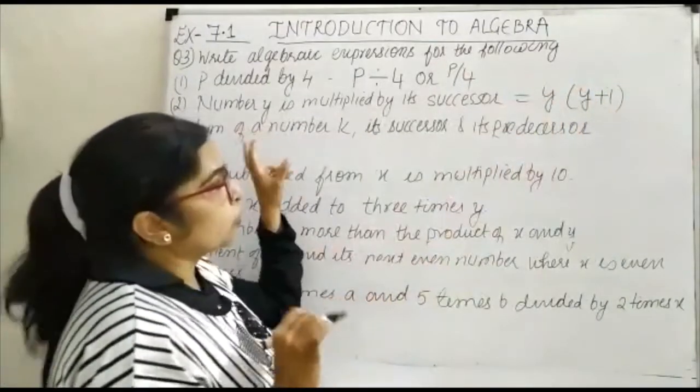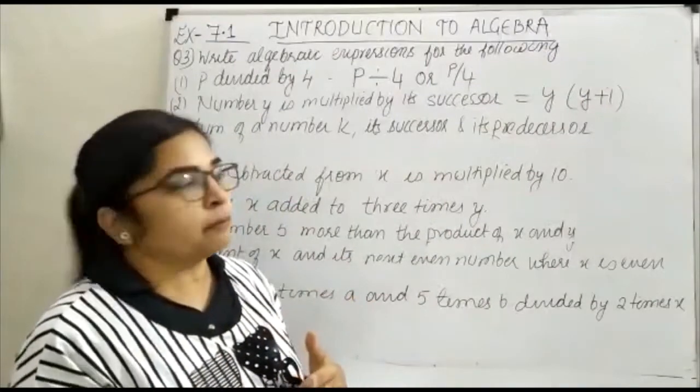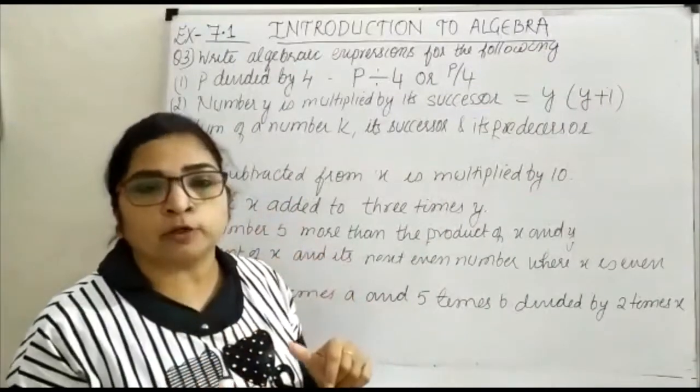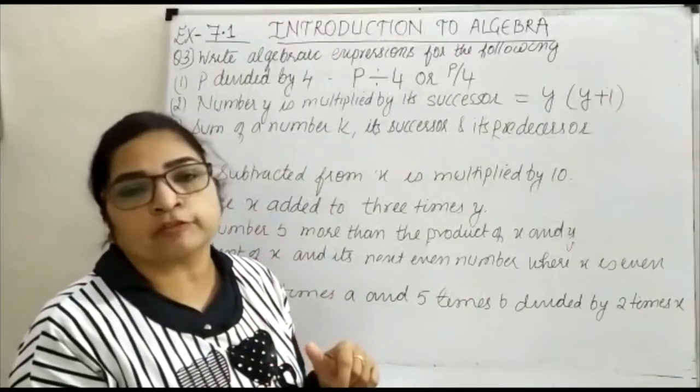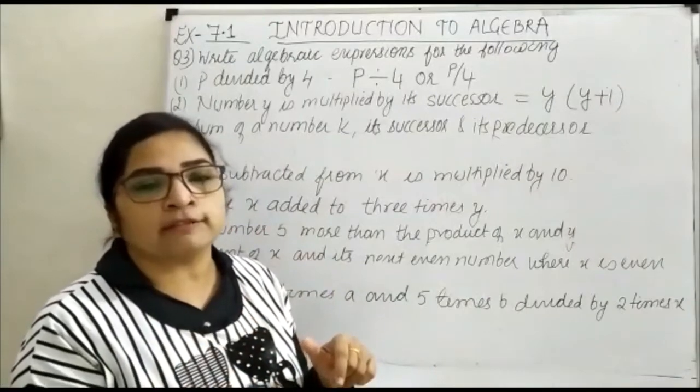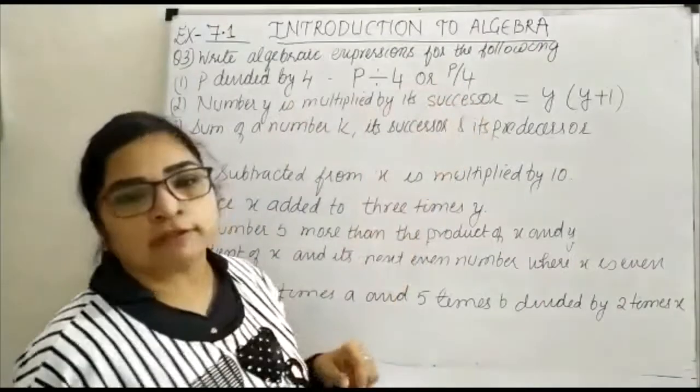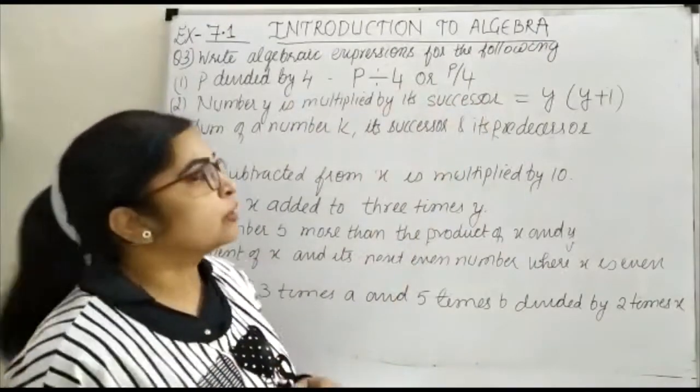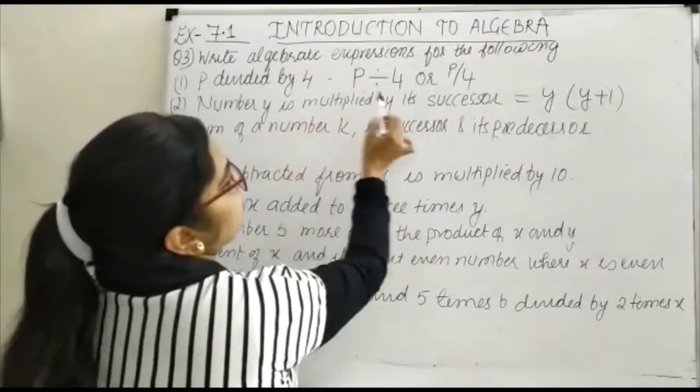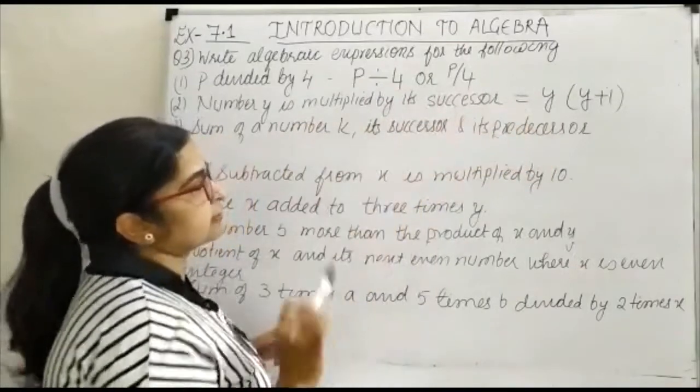Just see here, if you have a number, its successor will be that number plus 1. So if Y is 2, it will be 2 plus 1, which is 3. So 3 is the successor of 2. This way, Y plus 1 is the successor of Y. So number Y is multiplied by its successor.